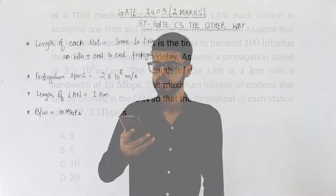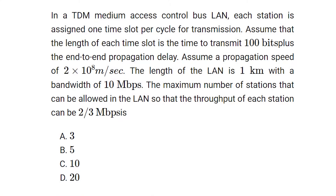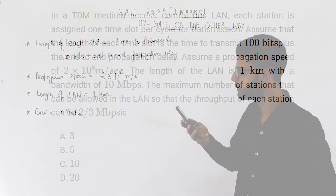Have a look at the statement. They are saying: in a TDM medium access control bus LAN, each station is assigned one time slot per cycle for transmission. Assume that the length of each time slot is the time to transmit 100 bits plus the end-to-end propagation delay. Assume a propagation speed of 2×10⁸ meters per second. The length of the LAN is 1 kilometer with a bandwidth of 10 Mbps. The maximum number of stations that can be allowed in the LAN so that the throughput of each station is 2/3 Mbps is?